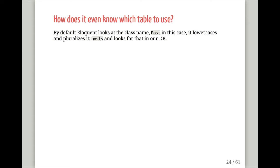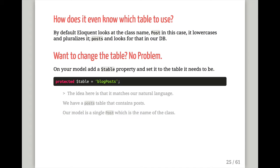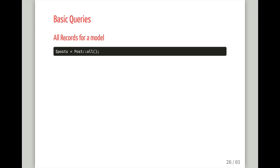If you've never used this before, you might wonder: you have a Post model — how does Eloquent know to go to the posts table? It looks at the name of the class, lowercases it, pluralizes it, and looks for that table in your database. If you want to override that, there's a $table property on your model. The reason the model is singular 'Post' and the table is plural 'posts' is to match natural language — very clean.